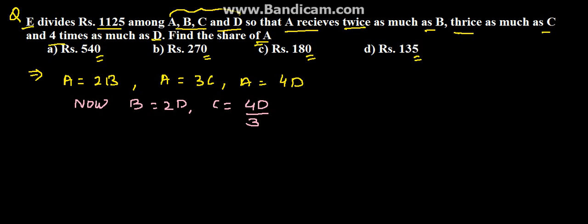So C will be equal to 4D upon 3. Given that A plus B plus C plus D equals 1125, we have been given this in the problem.